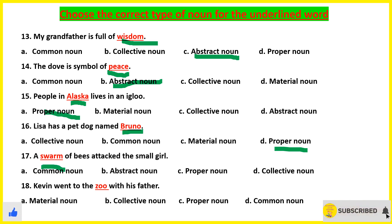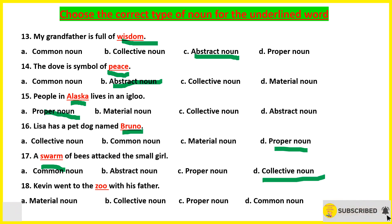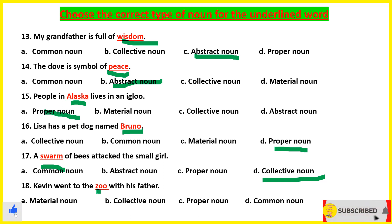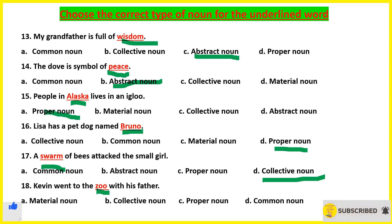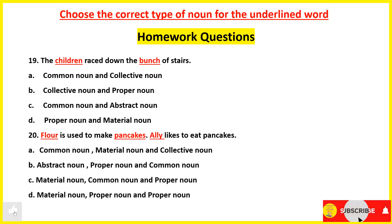'A swarm of bees attacked this small girl.' Swarm means a collection or group of bees, so at that time it is collective noun. 'Kevin went to the zoo with his father.' Zoo will be common noun — not proper noun, because we are not talking about any specific zoo, just zoo in general.